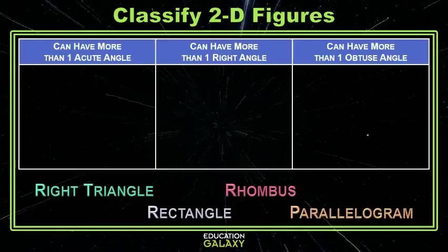Let's talk about acute, right, and obtuse, and how many we have. So first of all, we're offered a right triangle option right here. And a right triangle has exactly one right angle, so it cannot go in the more than one right angle section.